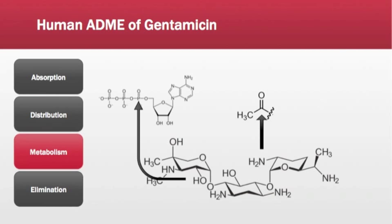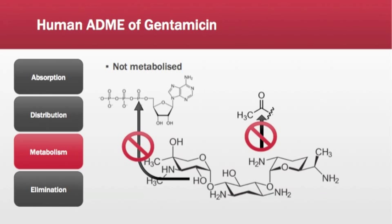Although there is obvious possibility for phosphorylation, acetylation, and adenylation, these metabolic transformations do not occur in humans. In humans, gentamicin is not metabolized at all. These metabolic steps do happen in some bacteria, and they represent one route to bacterial resistance to gentamicin.